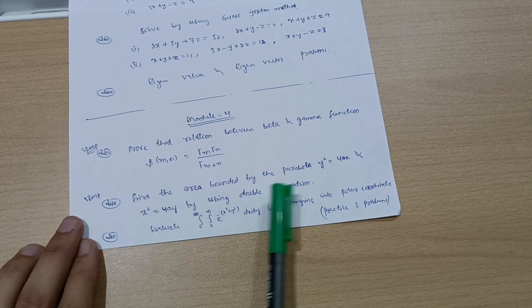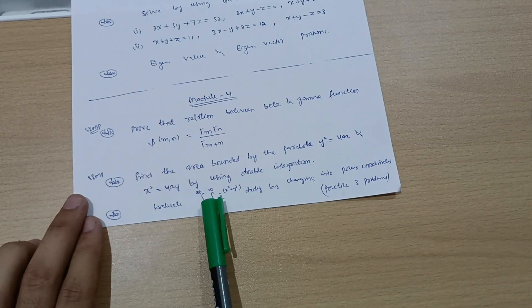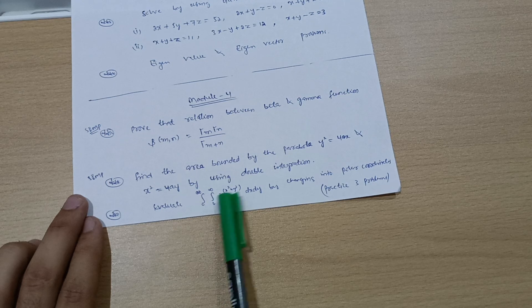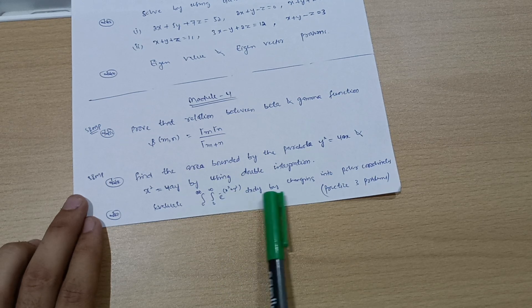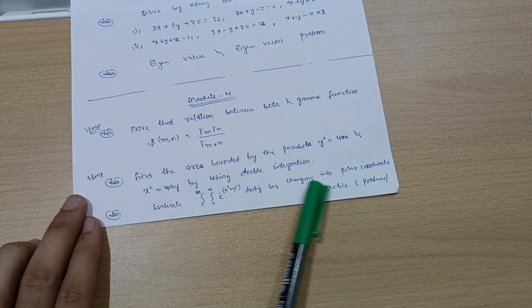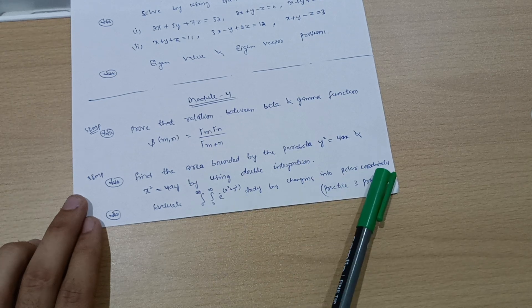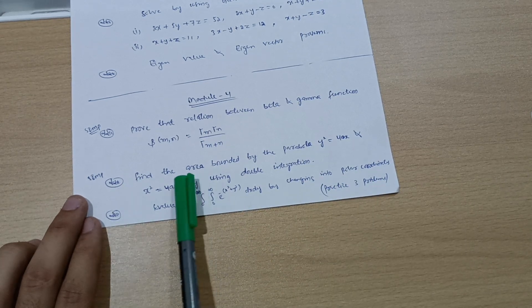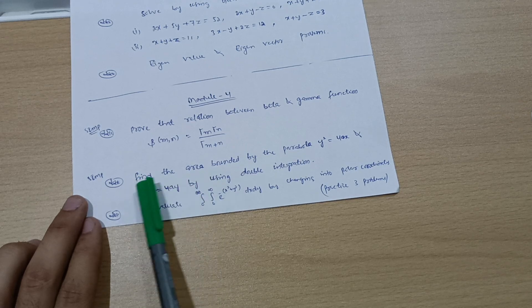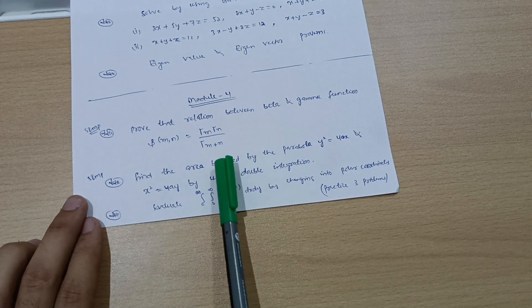Evaluate 0 to infinity, 0 to infinity, e to the power minus (x squared plus y squared) dx dy by changing into polar coordinates. On this concept of polar coordinates you should practice three problems. This question is asked every time, so you should focus on this.